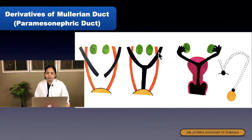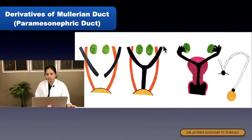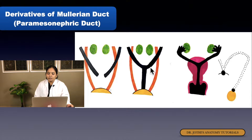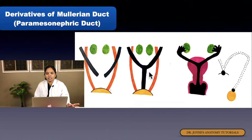Initially, the paramesonephric duct is open to the body cavity through a funnel-shaped opening at its cranial end. It lies lateral to the mesonephric duct, then crosses ventrally and goes horizontally. Its caudal part goes medial to the mesonephric duct. Both paramesonephric ducts — also called Mullerian ducts — then enter into the urorectal septum.